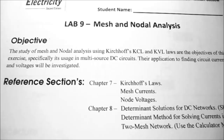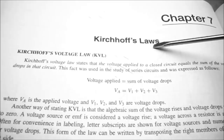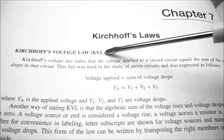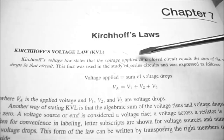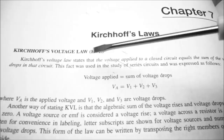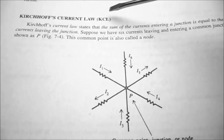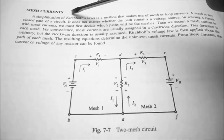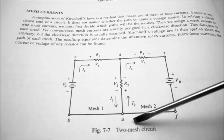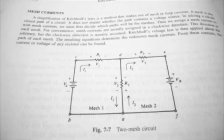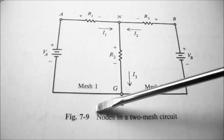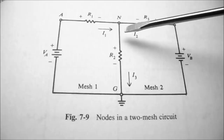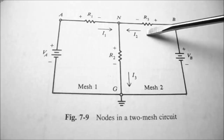In chapter seven they're talking about Kirchhoff's laws. Kirchhoff's voltage law, abbreviated as KVL, states the voltage applied to a closed circuit equals the sum of the voltage drops in that circuit. Kirchhoff's current law, abbreviated as KCL, states the sum of the currents entering a junction is equal to the sum of the currents leaving the junction. There's a section on mesh currents with an example of a two-mesh circuit, and a section on node voltages showing nodes in a two-mesh circuit with two currents entering a node and one current exiting.